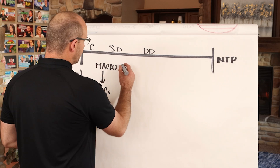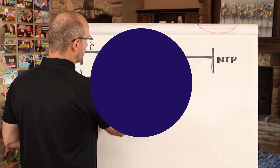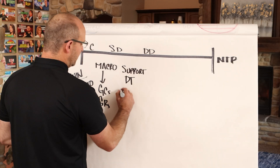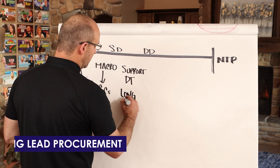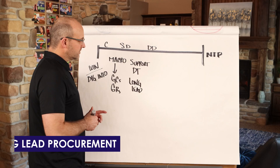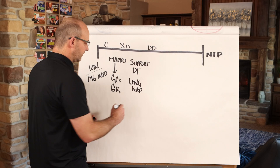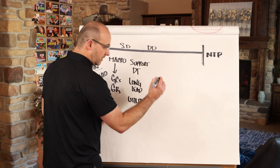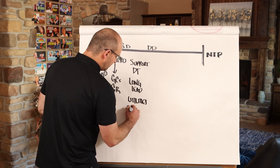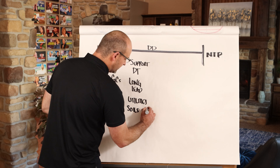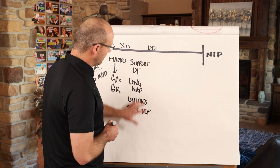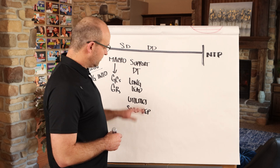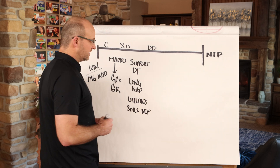In late schematic design, you'll want to make sure you're supporting the design team and focusing on your long-lead procurement. You're also looking at things like utilities for the plot of land you're building on, and reviewing the soils report to make sure you don't need shoring. Any long-lead, big-ticket items that need to be addressed — this is the phase to dig into them.